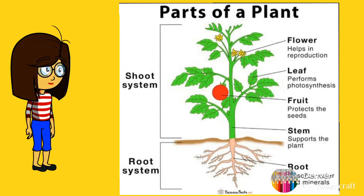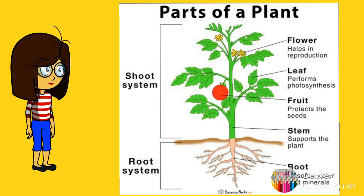Good morning students. Today we will be starting a new chapter — Parts of a Plant. A plant has many parts: stem, flowers, leaves, and fruits that grow above the soil and form the shoot system, and the roots that grow below the soil forming the root system. As you can see in the picture, these are the different parts of the plant.